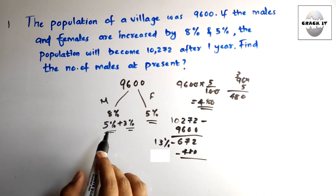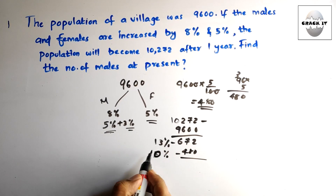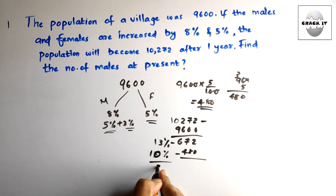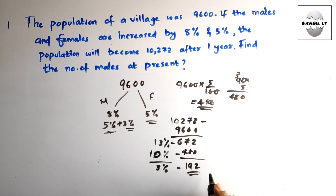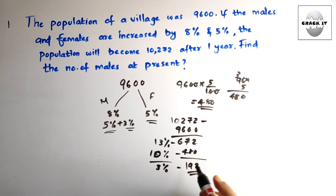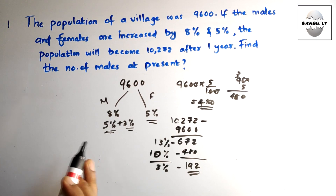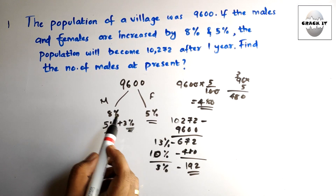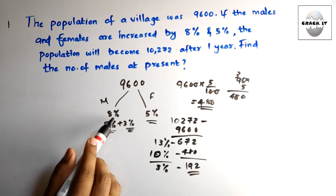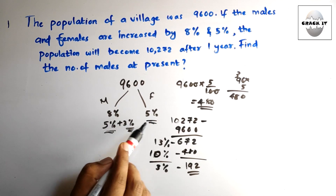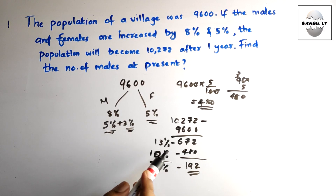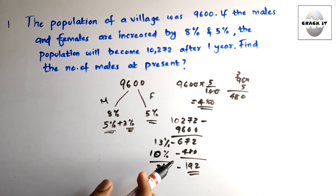We already found that 10% = 480 (which is 5% + 5%). So the remaining 3% = 672 − 480 = 192. This 3% comes from the males only, because we split the male increase of 8% into 5% + 3%. The 5% part is included in the common 480, so this extra 3% of 192 belongs entirely to males.